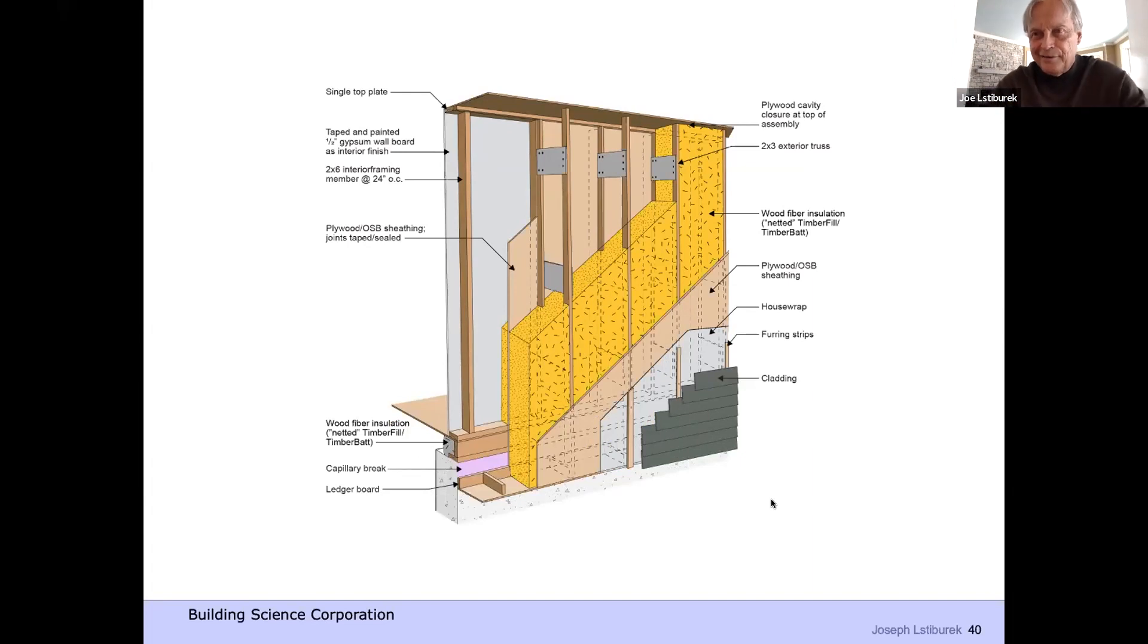Well, I want more. All right, fine. So I can just replace the rigid insulation on the outside with a ladder truss and blow it filled with stuff. I've got my bat insulation in the cavity, in the wood frame cavity, and then I blow the insulation into that space. R40, R60, knock yourself out. It's not the board stuff.